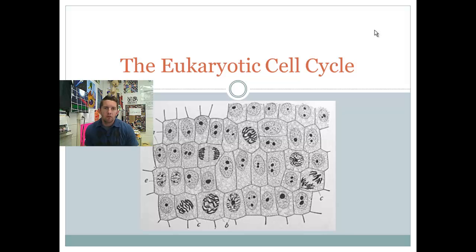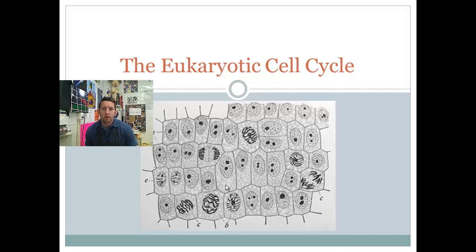This is a picture of a number of plant cells. You can tell they're plant cells by their fairly regular shape. You can see the genetic material inside the nucleus, the dark spots of the nucleoli. These are in various states of the cell cycle, whether it's interphase, prophase, metaphase, anaphase, or telophase. Hopefully by the end of this unit, you'll be able to identify these different phases.